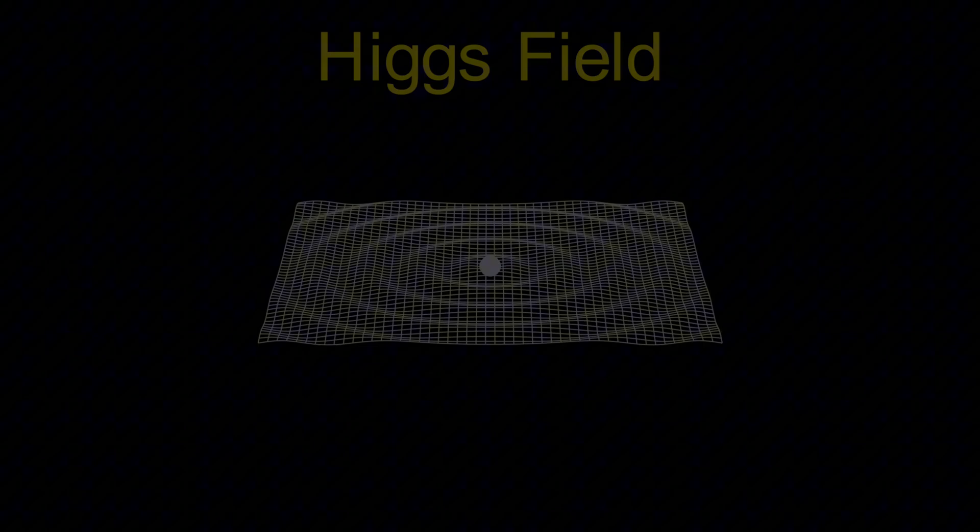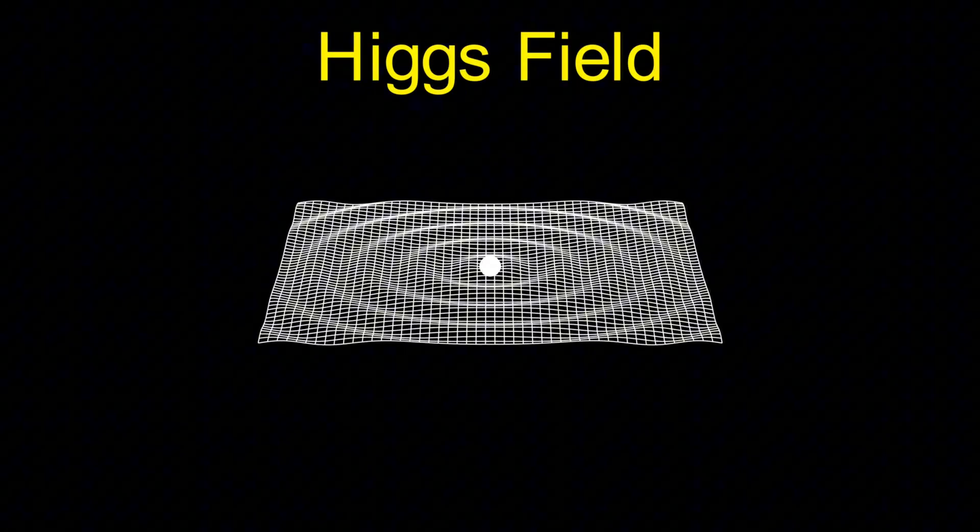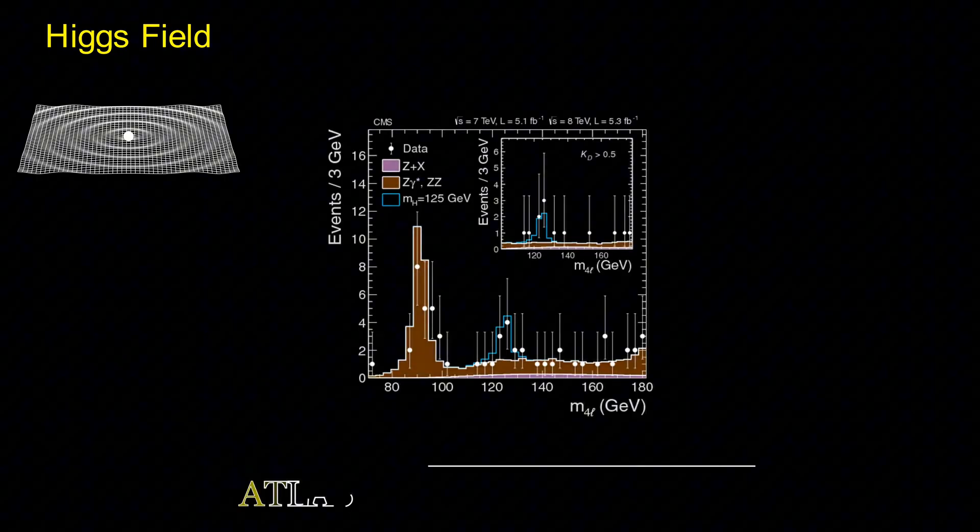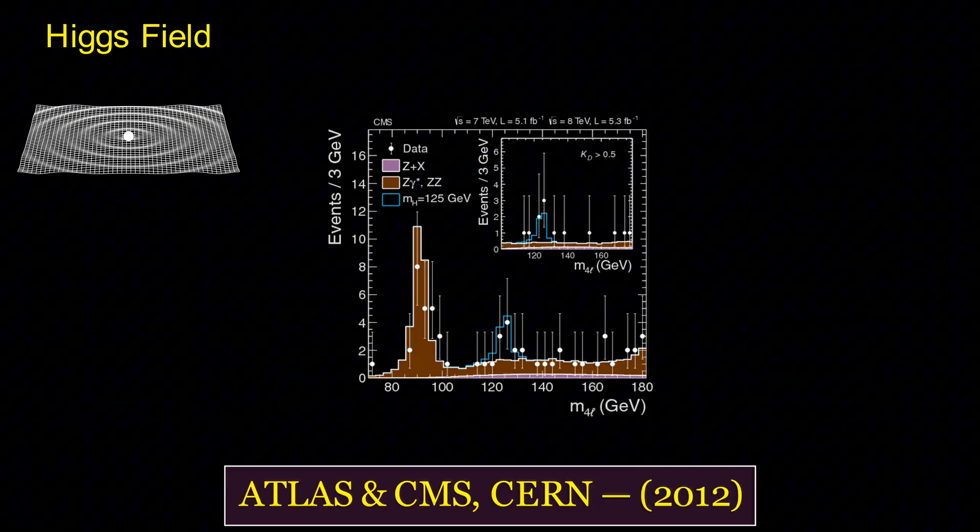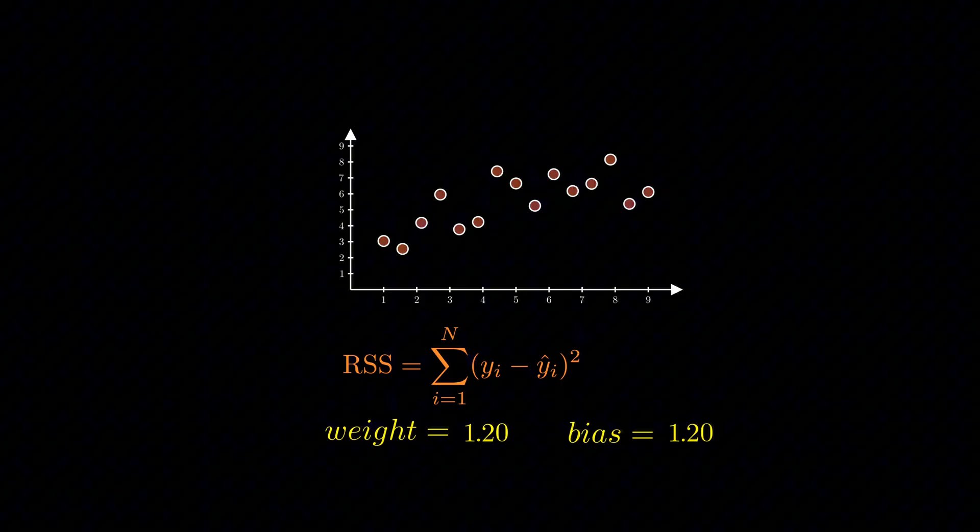Consider the mass of the Higgs boson. It wasn't derived purely from theoretical equations, but measured through painstaking analysis of data from the Atlas and CMS detectors at CERN's Large Hadron Collider, with the discovery announced in 2012.